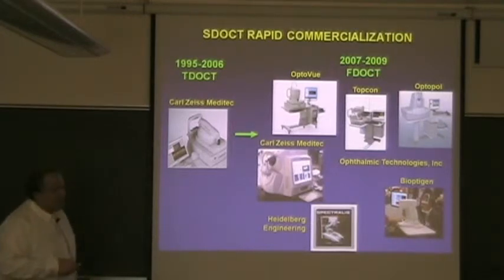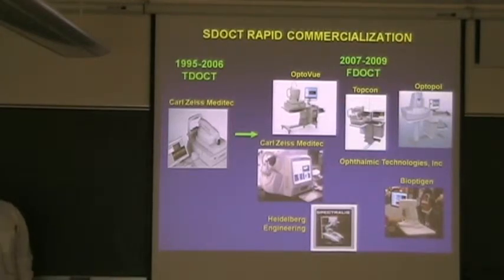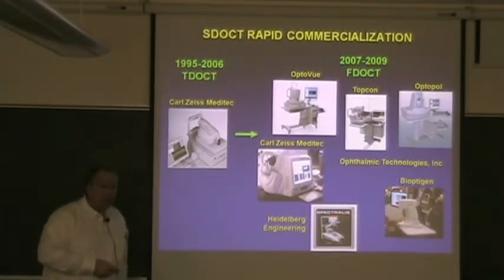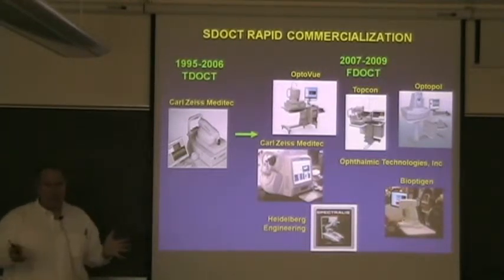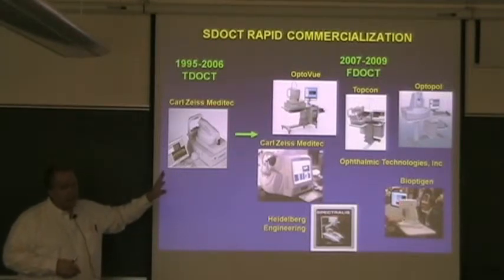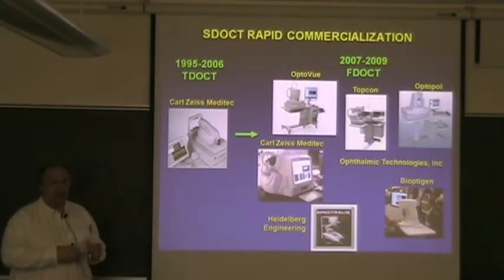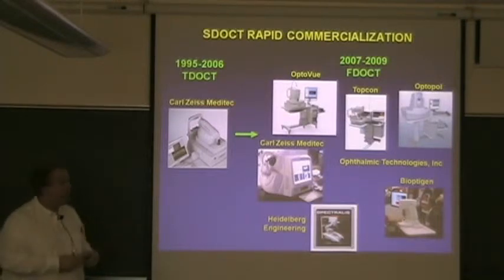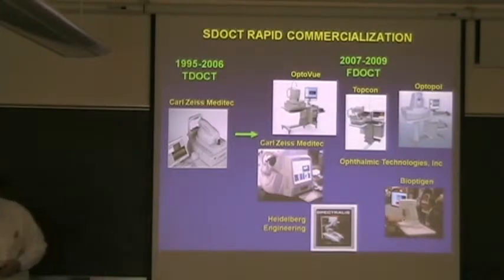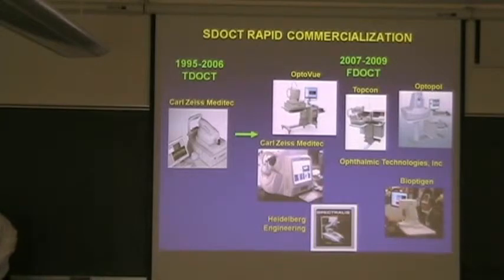The time-domain OCT was actually commercialized out of MIT, out of Jim Fujimoto's lab, in 1995. With this new generation of technologies, in the last two years there's been an explosion — basically at least seven and probably more like 14 or 15 companies that are now selling competitive systems. There was also a big IP opening that happened that contributes to this.